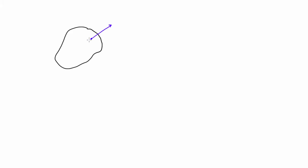If we have some object that has two forces acting on it, and we know where one force acts and the direction the force is going in, then for this object to be in static equilibrium the other force just has to be somewhere along this line of action and going in the equal and opposite direction. So if this was 10 kilonewtons, then this one down here would have to be 10 kilonewtons, equal and opposite, sharing the same line of action.